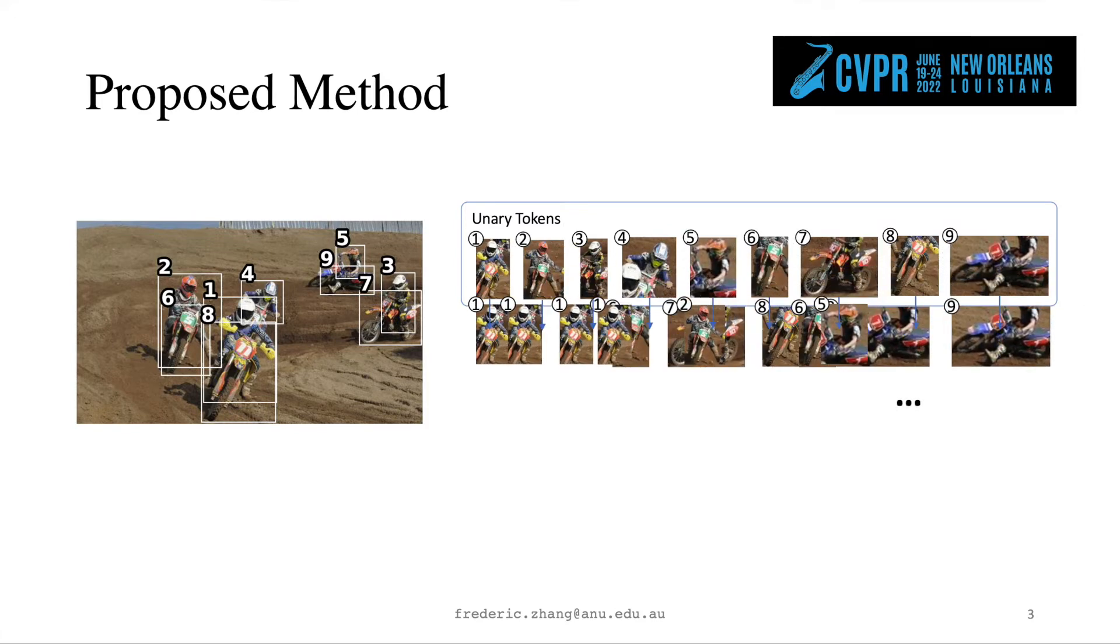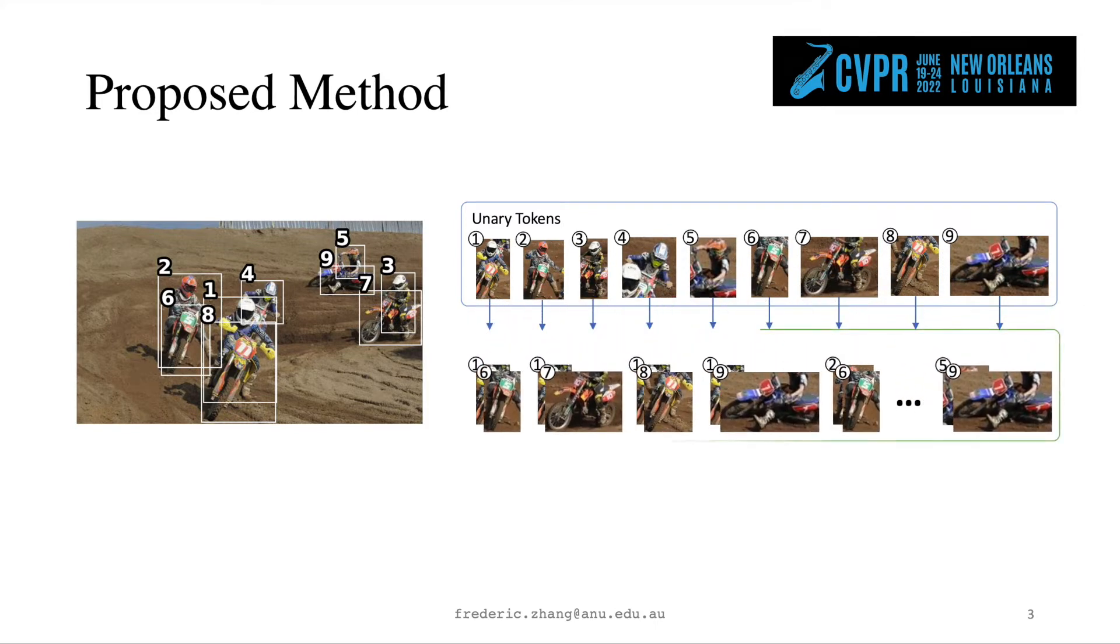Subsequently, the resulted tokens will be exhaustively paired up to form pairwise tokens, in analogy to human-object pairs. Additional transformer layers will then be employed to process these pairwise tokens. Finally, an MLP will be used to produce classification scores.